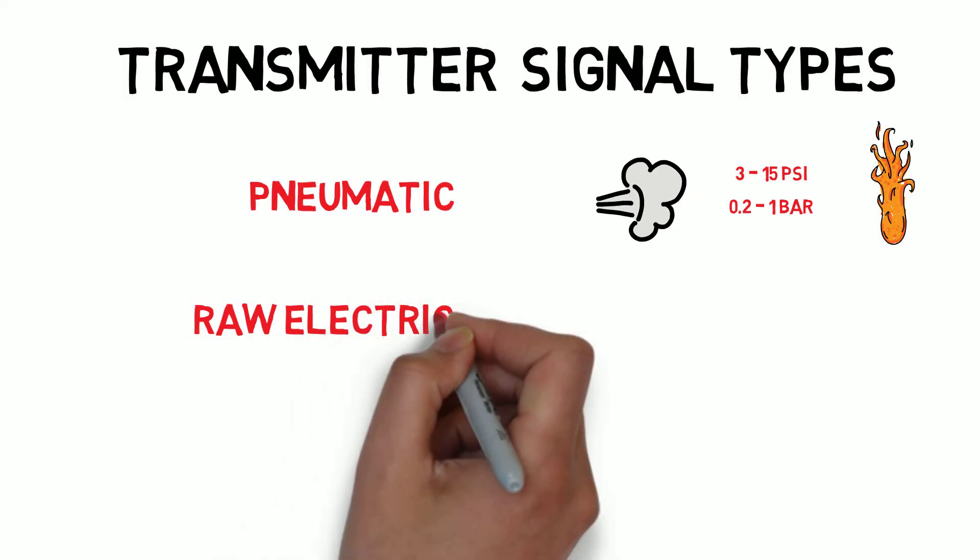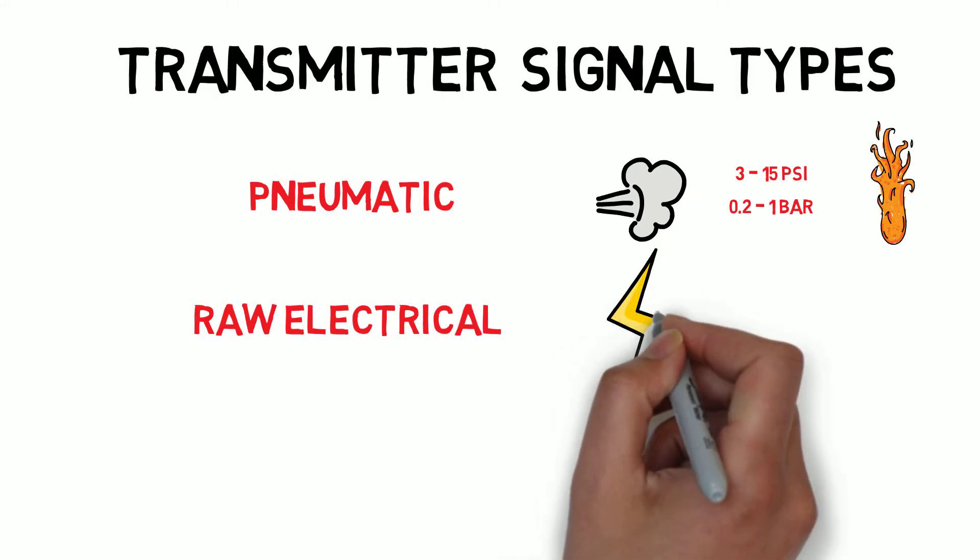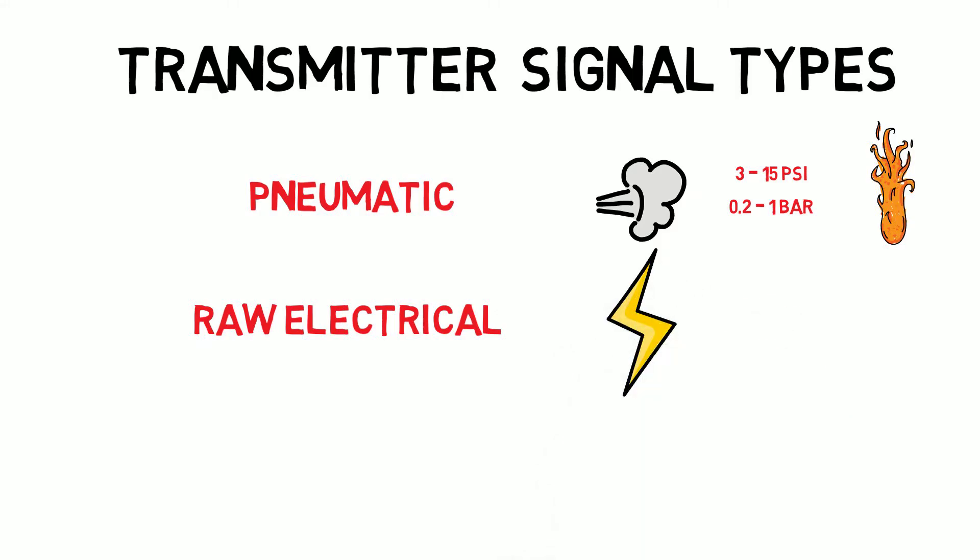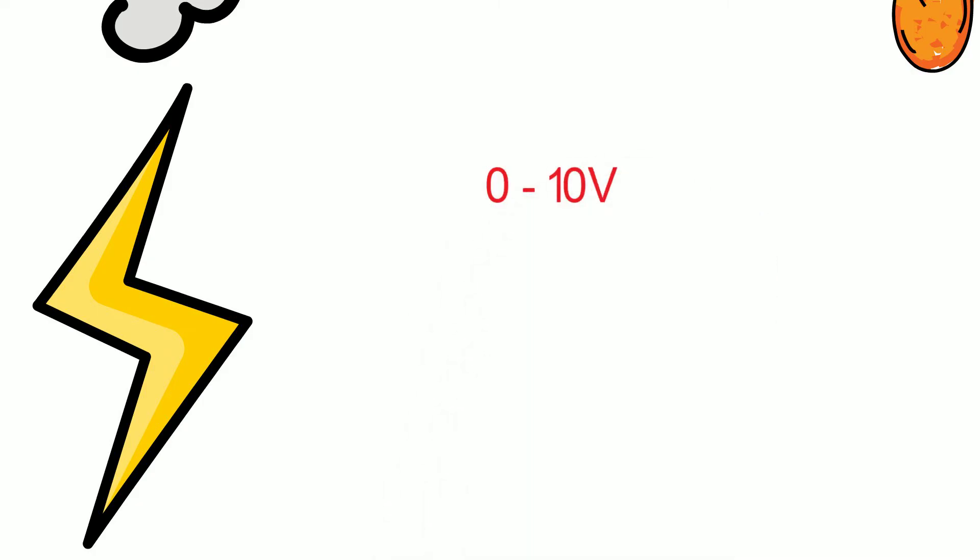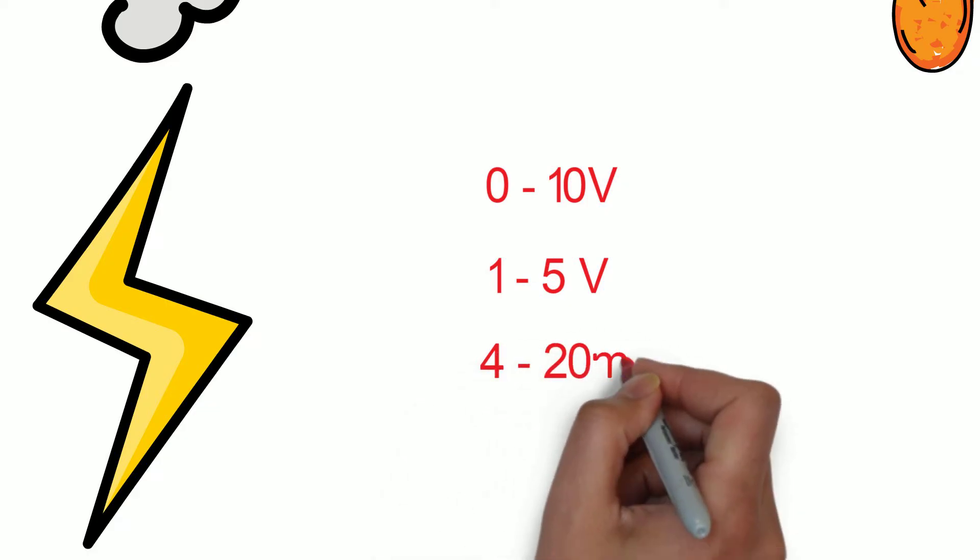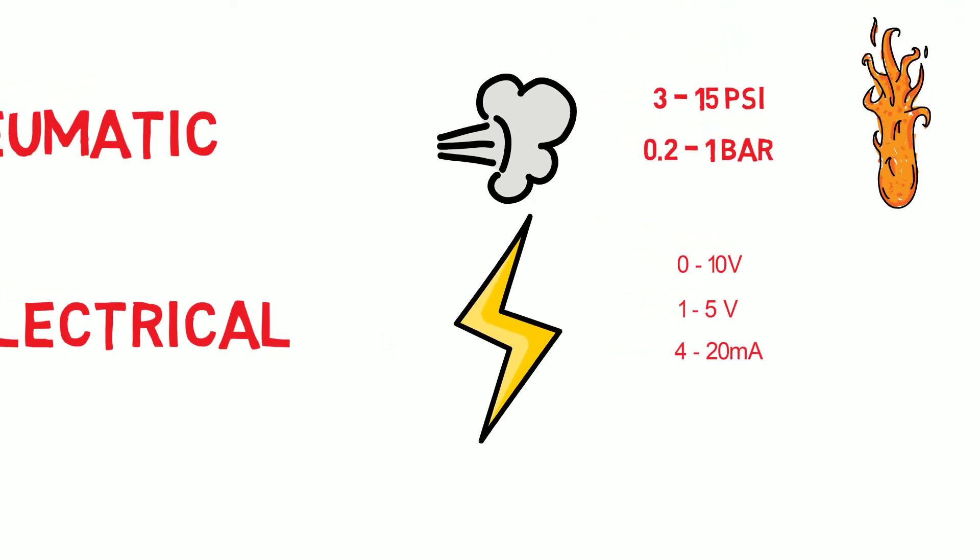So the next category is raw electrical signals. For electrically powered transmitters they work by manipulating an output voltage or current. The most common form of raw electrical signals are 0 to 10 volts, 1 to 5 volts or 4 to 20 milliamps. The 4 to 20 milliamps is the most common form of signal you'll find even in modern equipment.